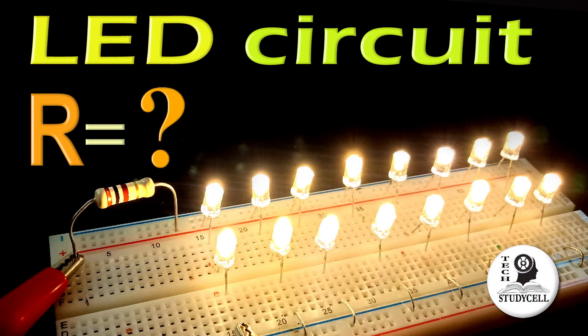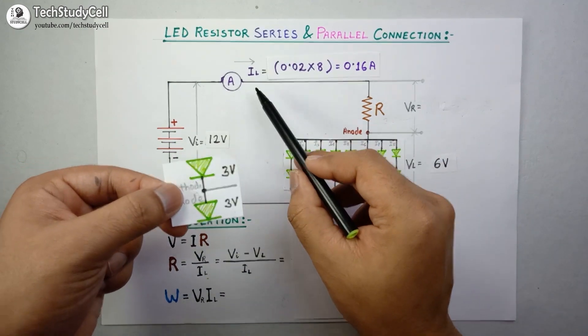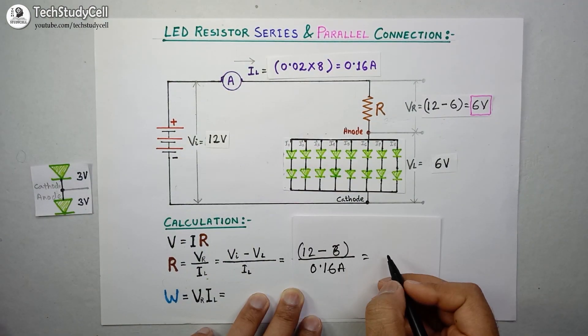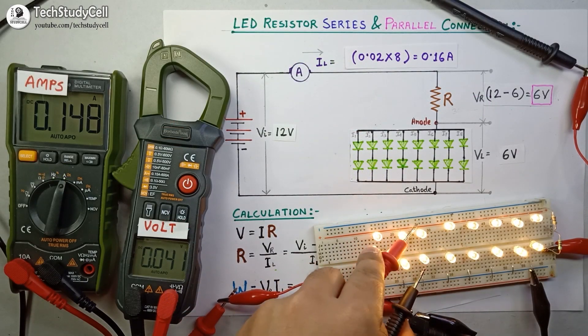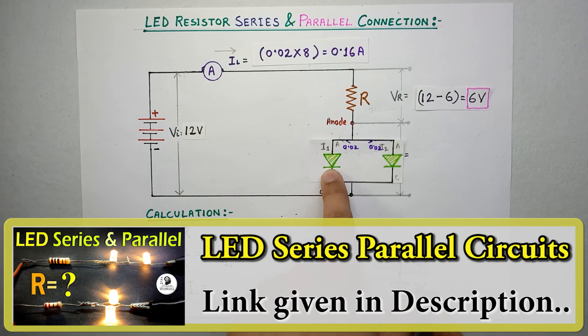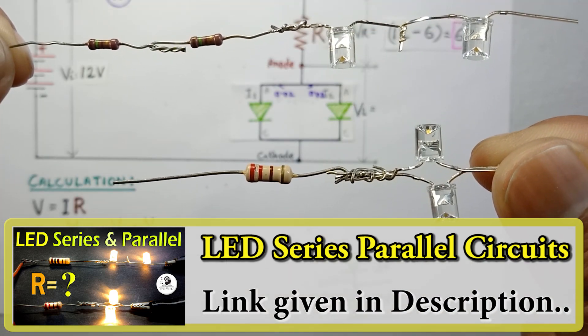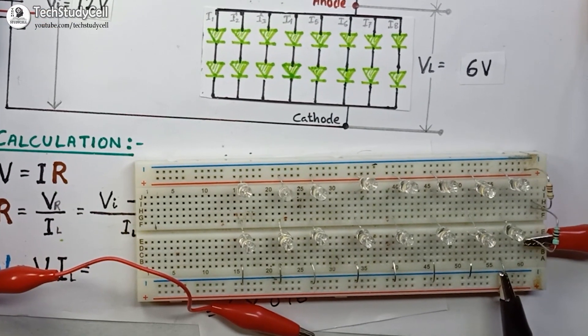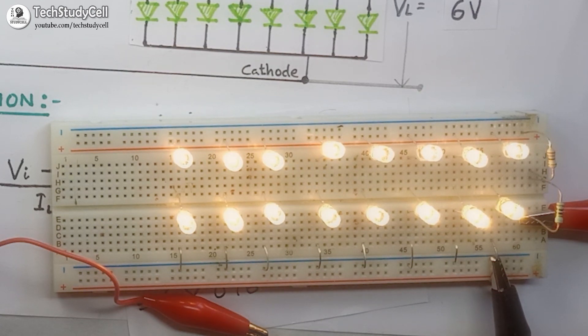Hello friends, welcome to Tech Study Cell. In this video we will mainly talk about the combination of series-parallel circuits with multiple LEDs, and accordingly we will calculate the resistance value and measure the voltage and current readings on the multimeter. In my previous video I have already talked about the basics of series-parallel LED circuits — you can find the link in the description. This video will be really helpful if you want to make LED lights in your home. So let's get started.